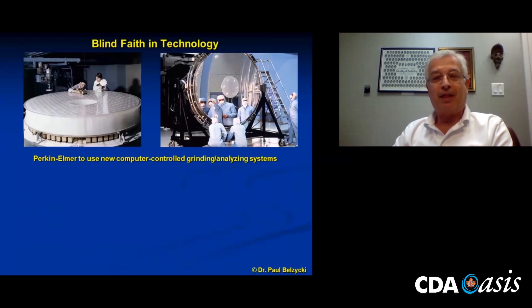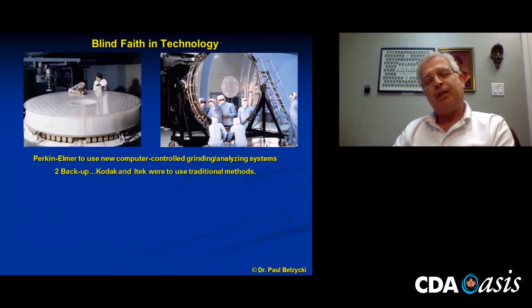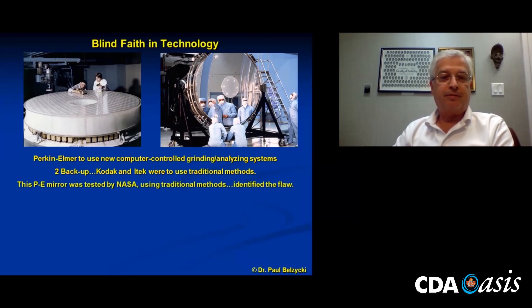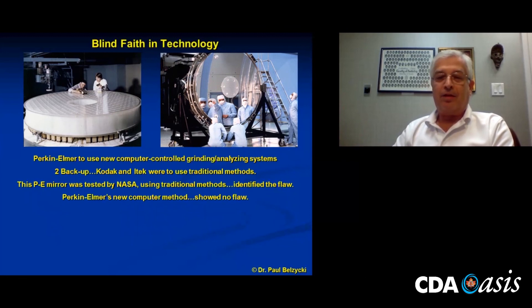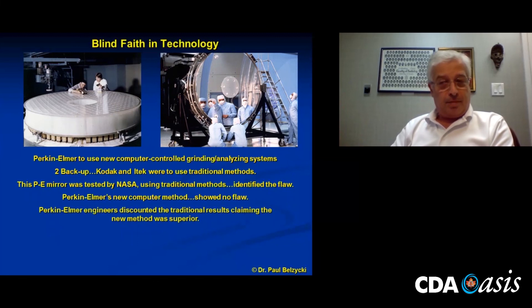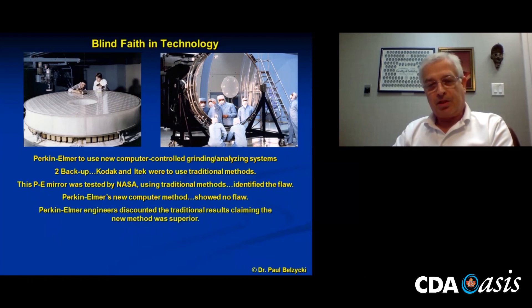The company contracted by NASA was Perkin Elmer. Their claim to fame was using a new computer-controlled grinding and analyzing system to get this eight-foot slab of glass into perfect dimensions. NASA was a little worried and said, let's go with two backup mirrors — one ground by Kodak, one by iTech — using traditional methods. During processing, the Perkin Elmer mirror was tested by NASA scientists using traditional methods, and they identified the flaw: the mirror was just a hair too flat. The Perkin Elmer computer-controlled method did not show the flaw — it failed to pick it up.